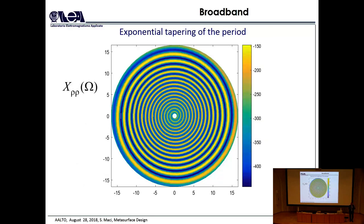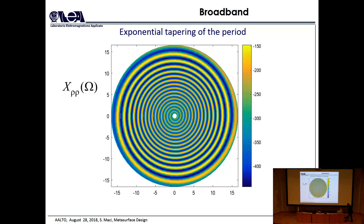Up to now I have been talking about uniform period. What happens if you change the period along the radius? You can beat the limit we have seen before. By moving gradually from small periodicity at the center to large periodicity toward the external periphery, you can match the wavelength of the surface wave to the periodicity at different radii for different frequencies. When frequency changes, you have a sort of active region — not active in the sense of a spiral, but always converting surface wave to leaky wave, just in a gradual sense. This gives very large bandwidth, but at the cost of efficiency.